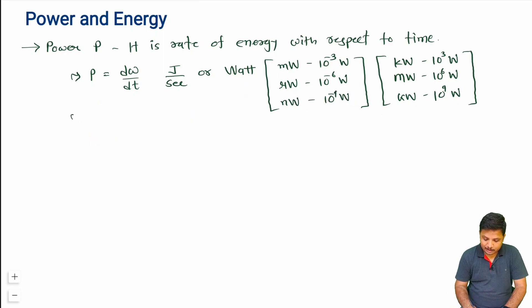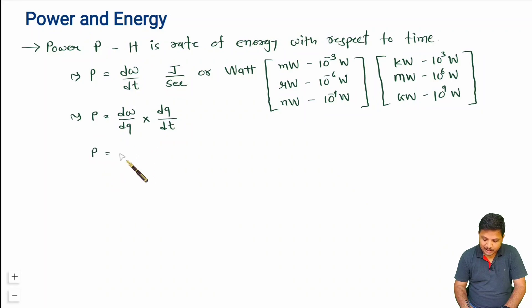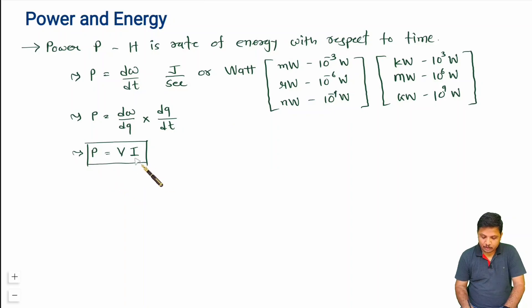Let us elaborate on power as dW/dt. If we multiply and divide by dq, then dW/dq is electric potential (voltage), which I have already explained in my previous video, and dq/dt is current, also explained previously. So power equals voltage multiplied by current — P = VI.